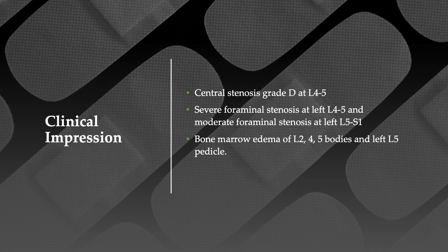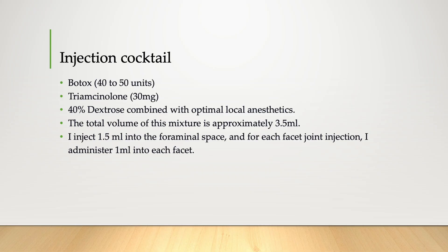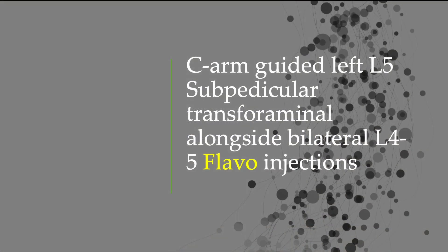For his treatment, I use a cocktail of Botox, 40–50 units triamcinolone 30 mg, and 40% dextrose combined with optimal local anesthetics. The total volume of this mixture is approximately 3.5 ml. I inject 1.5 ml into the foraminal space, and for each facet joint injection, I administer 1 ml into each facet — C-arm guided left L5 subradicular transforaminal alongside bilateral L4-5 flavo injections.